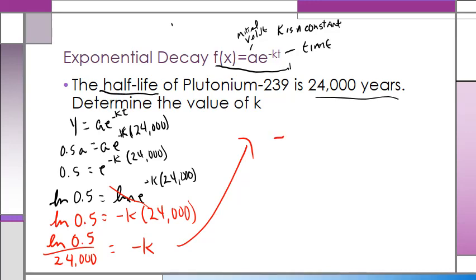So now I've got negative LN 0.5 over 24,000 equals k. And this I can put into the calculator.